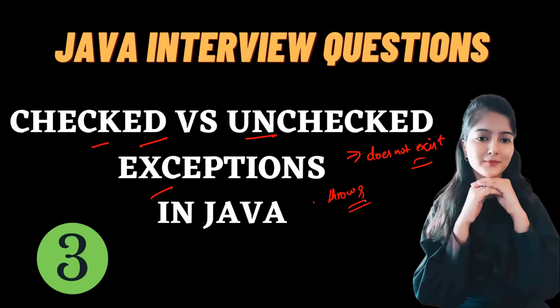The chances of these exceptions occurring are very high in such scenarios. In short, the exceptions that are checked by the compiler for smooth execution of the program at runtime are known as checked exceptions — those for which the chances of occurring are very high.